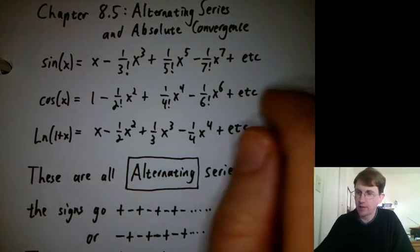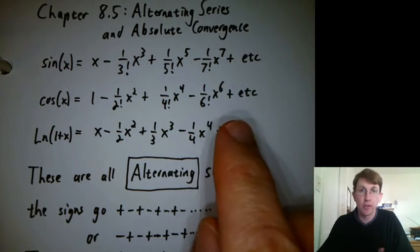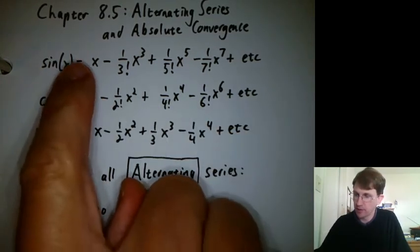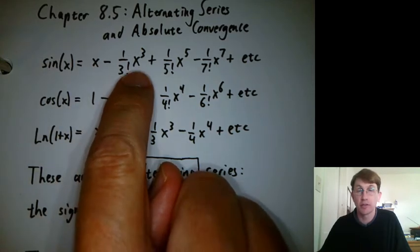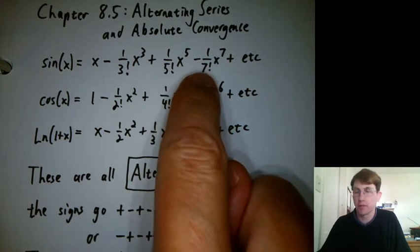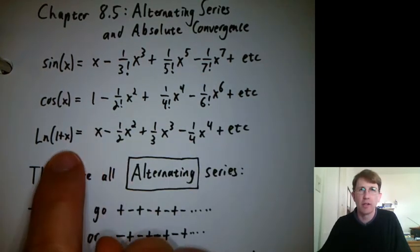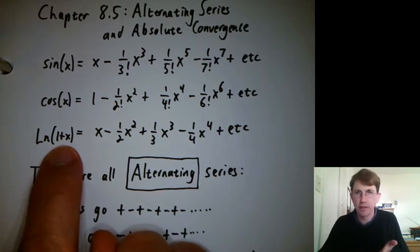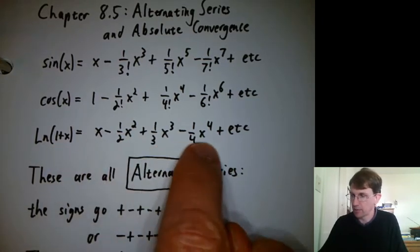Chapter 8.5 is about alternating series and absolute convergence. Let's think back to some of the polynomials we've seen that approximate other functions, like sine of x equals x minus 1 over 3 factorial x cubed, plus 1 over 5 factorial, and so on, minus 1 over 7 factorial. Saw the same thing for cosine. We didn't spend a lot of time on log x. It turns out to be a little easier to write a series for log of 1 plus x, but it ends up being something like this.